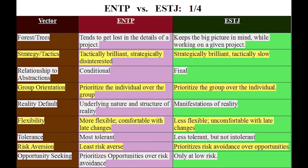They're ideal to manage people when you have something concrete that needs to get done. Moving on to strategy versus tactics: ENTPs are tactically brilliant but strategically disinterested. ESTJs are strategically brilliant but tactically slow. Strategically brilliant is not an overstatement if you narrow the scope to their area of expertise — though they're not typically broad in their range of skills.